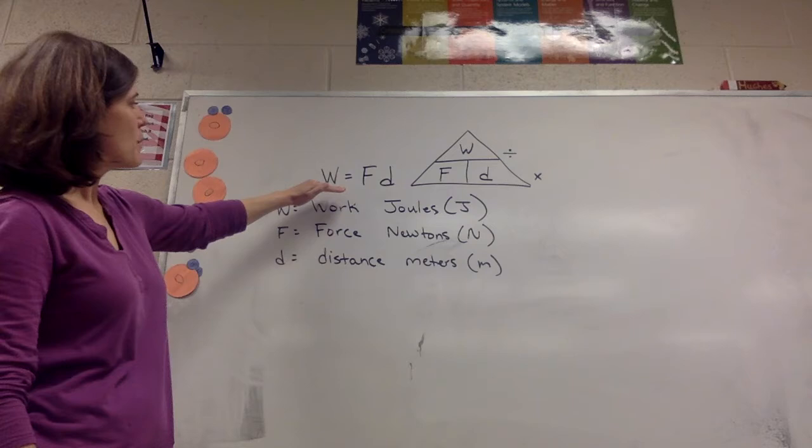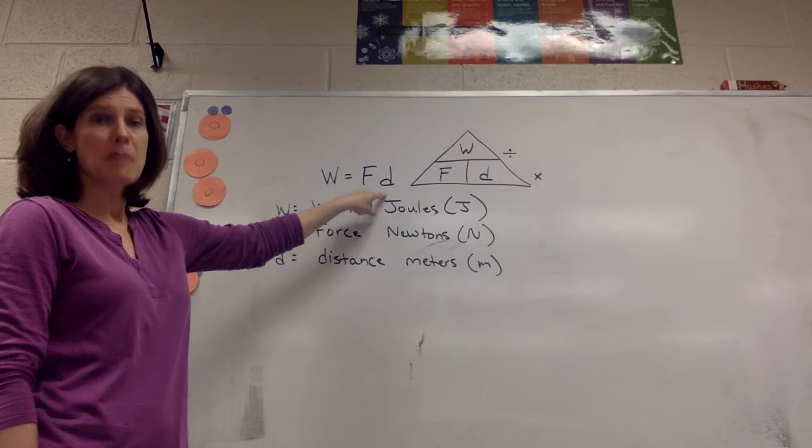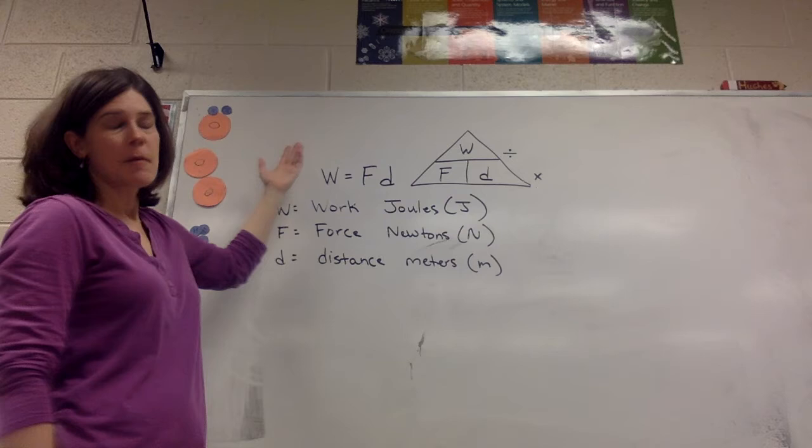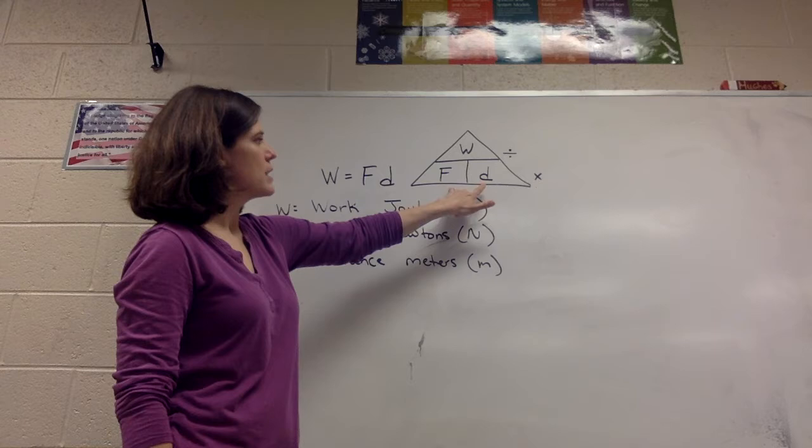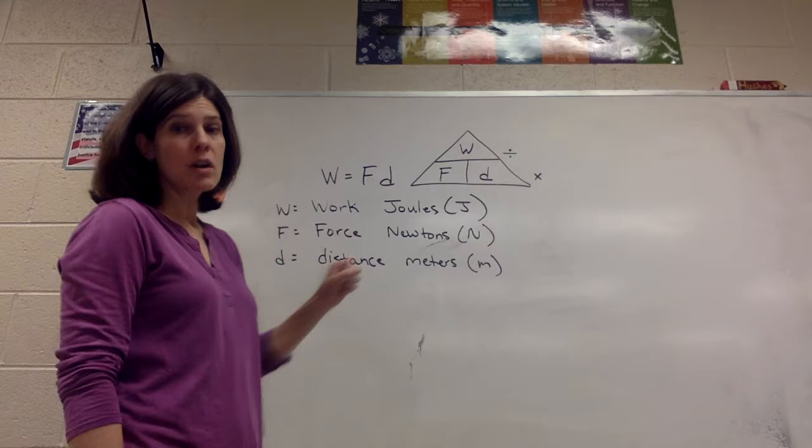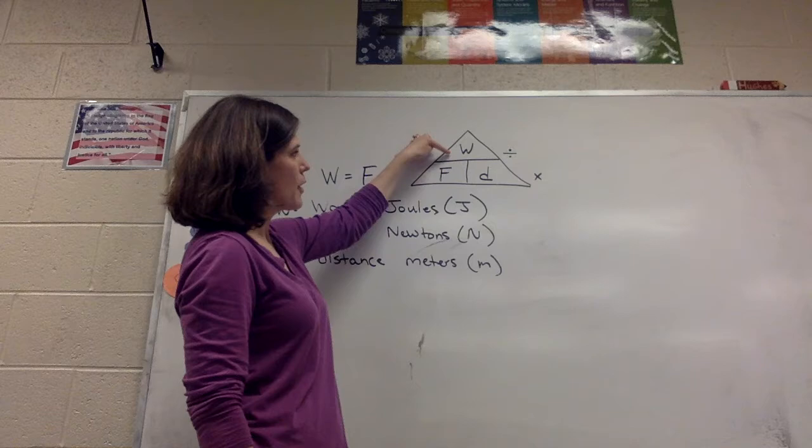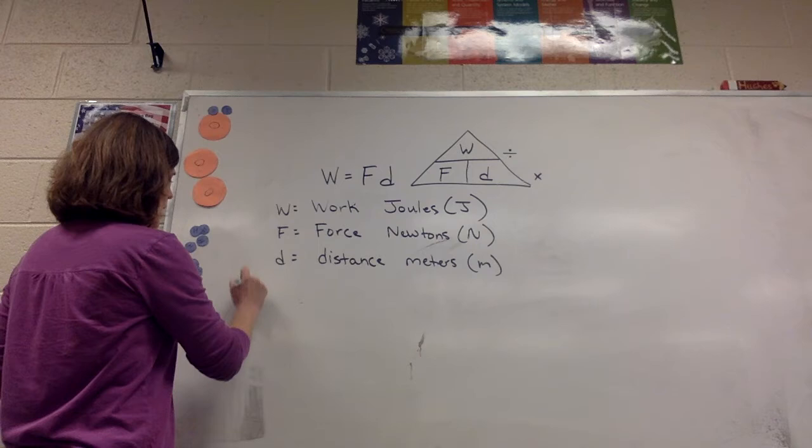So going back to the equation, to calculate work you're going to take the force applied to the object and multiply by the distance that the object moves. Remember we can solve for any of the variables as long as we're given the other two. Since there are three variables we can use the triangle method. Remember F and D, force and distance, are side by side in the equation so they need to be side by side in the triangle and that leaves work to go in the top spot of the triangle. When the numbers are side by side that means multiply. If one is on top of the other then you're going to divide, always top divided by bottom.